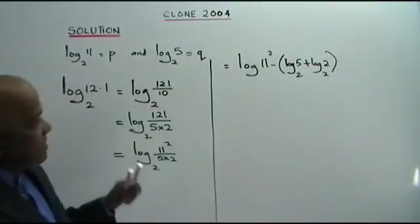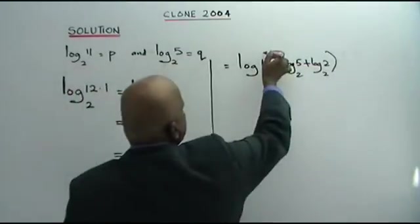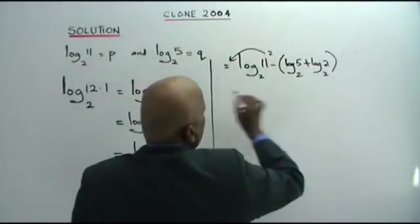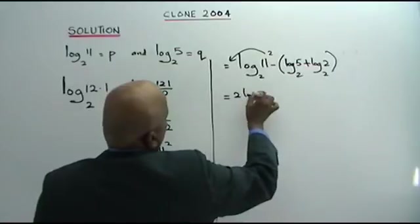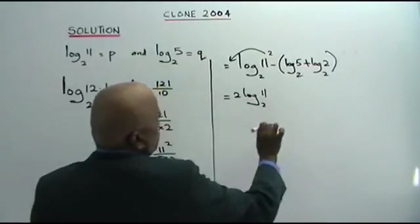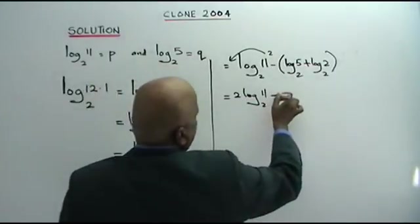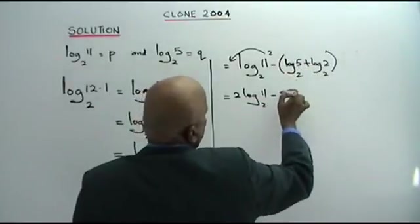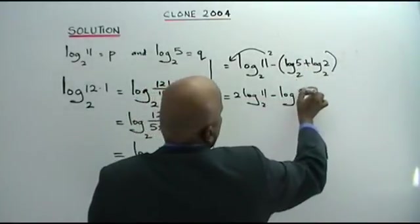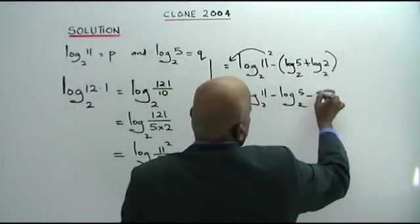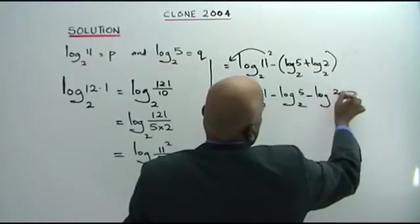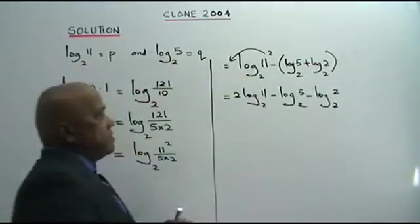Now we bring this forward. All are base 2. So you have 2 log 11 base 2 minus log 5 base 2, negative positive, minus log 2 base 2.